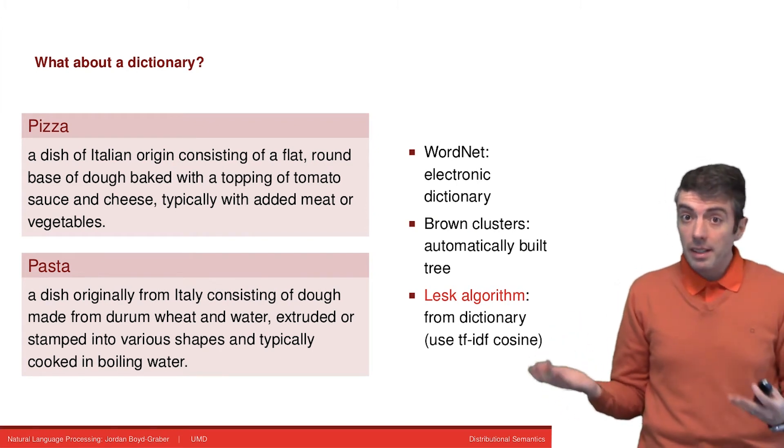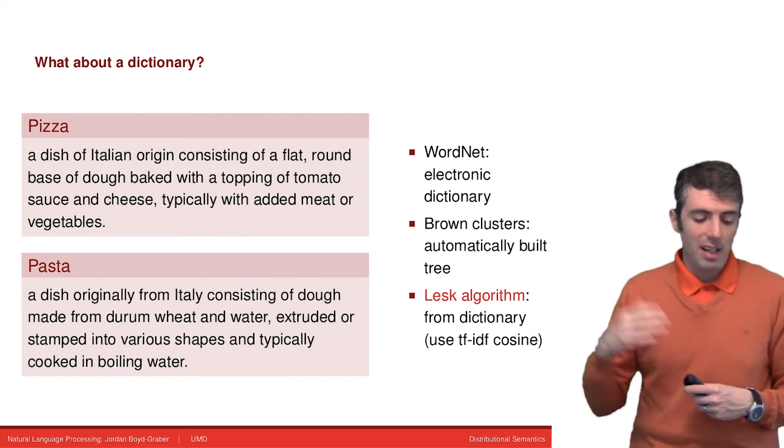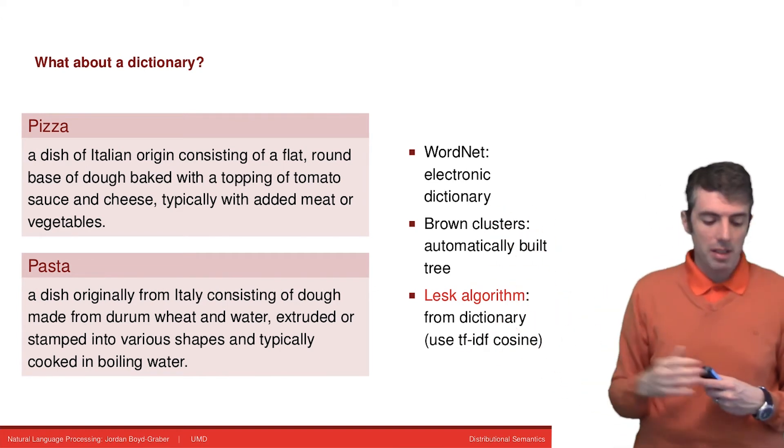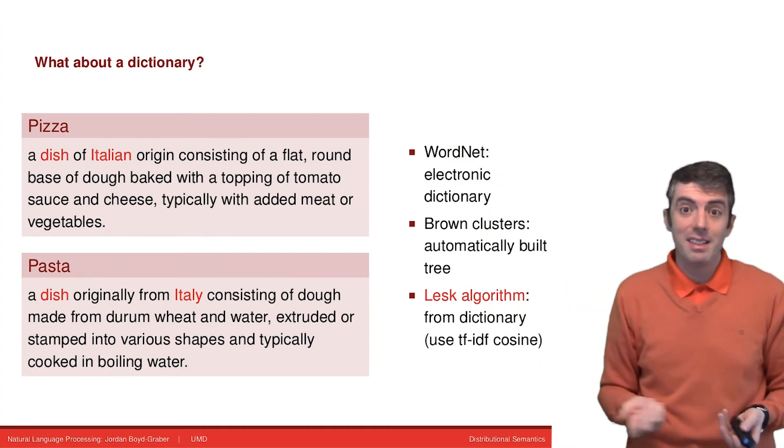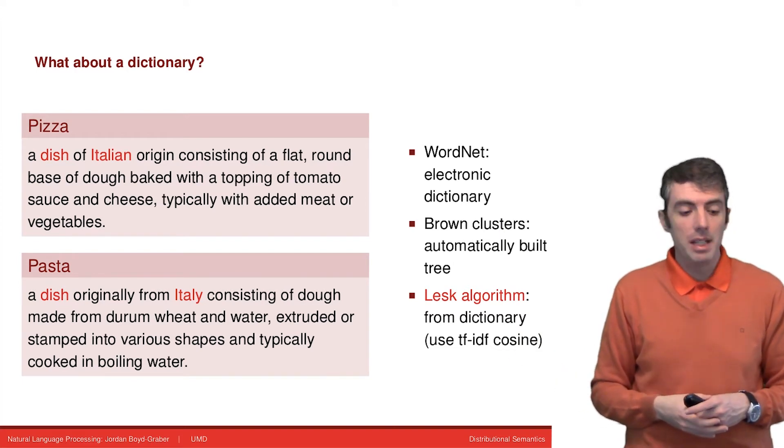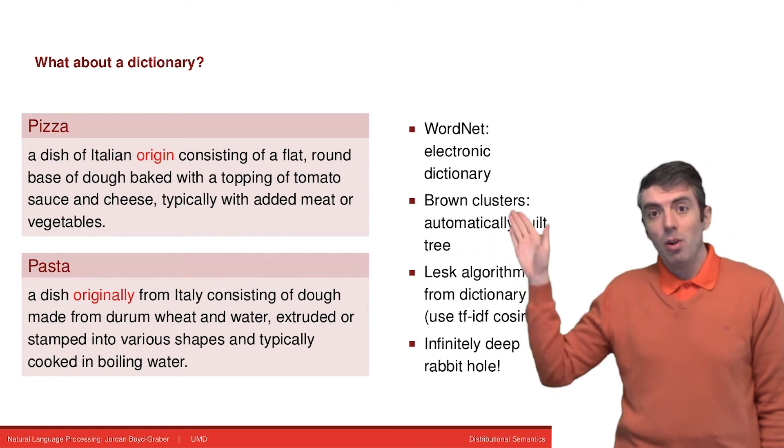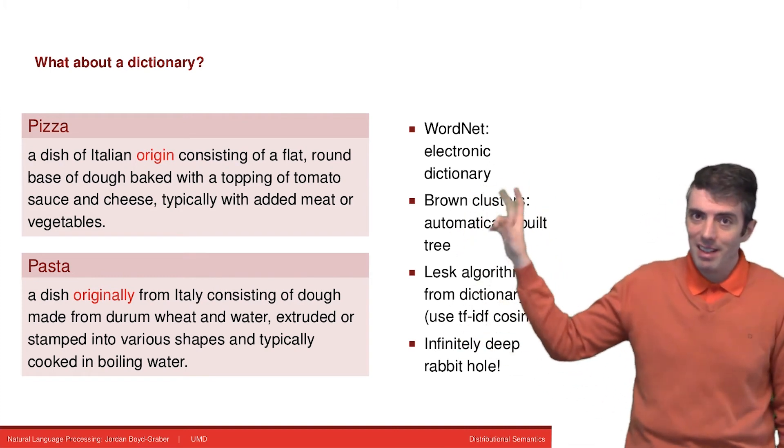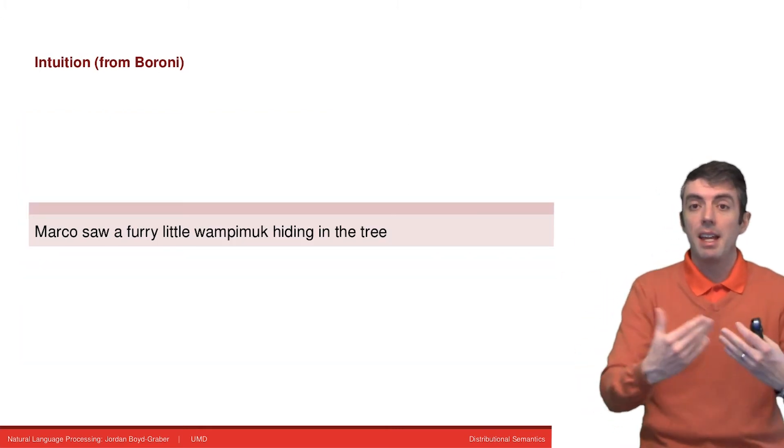Another option, if you have written dictionaries and not electronic dictionaries, is that you can look at the definitions of words. For example, we asked this question, how similar is pizza to pasta? You can look at the dictionary definitions of these two words and see how similar they are. You see that both of them are an Italian dish, and that's encoded in the words that are used to describe what pizza and pasta mean. You can infinitely regress on this. Origin and originally are somewhat similar. You could use word similarity on that to get that pasta and pizza are even more related. So these are the methods that came before.